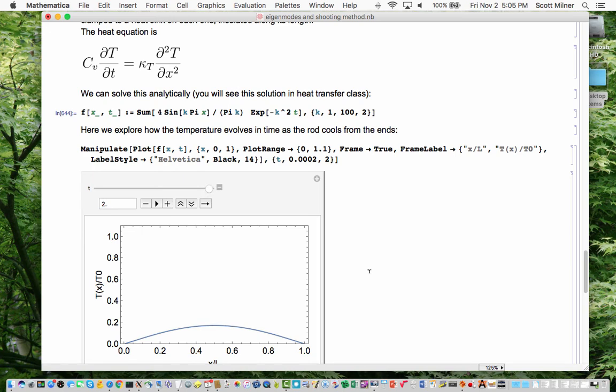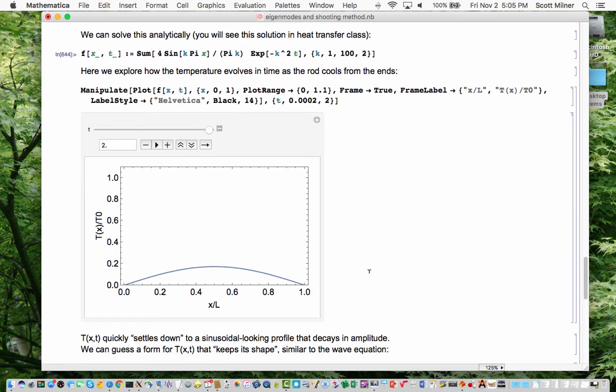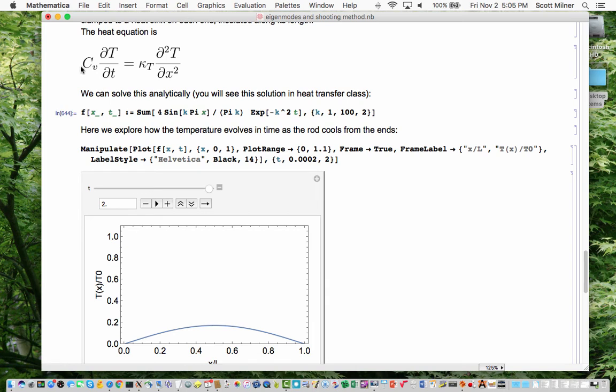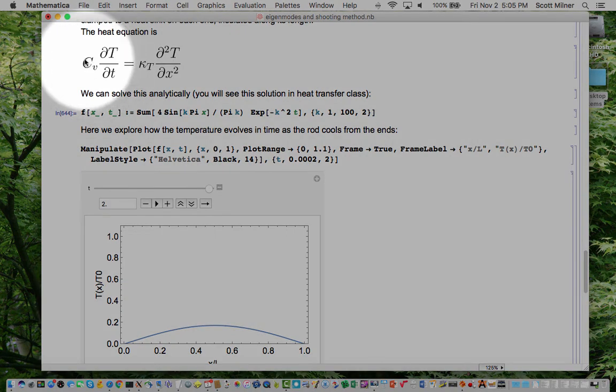But another thing that you notice is that as time goes on pretty soon the shape of the temperature profile seems to be the same just getting weaker. It's in fact looks like a sinusoid it looks like one half of a sine wiggle and it keeps dropping and dropping and dropping and keeps going down. So we'd like to see analytically how that happens. Here is the heat transfer equation.